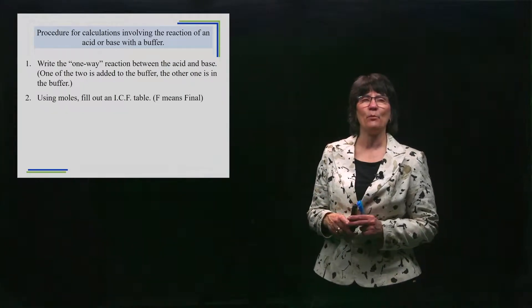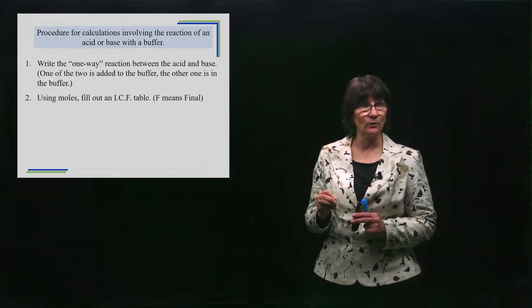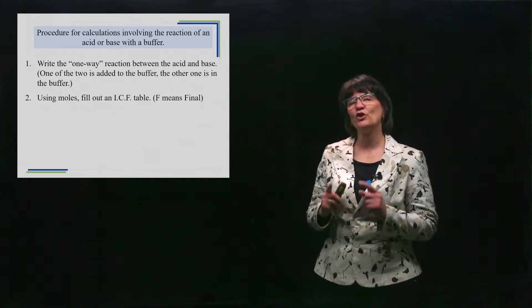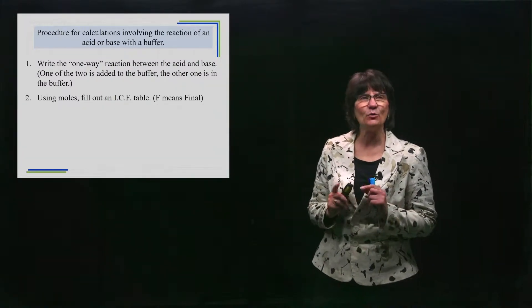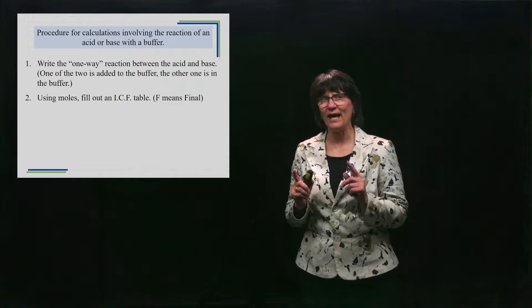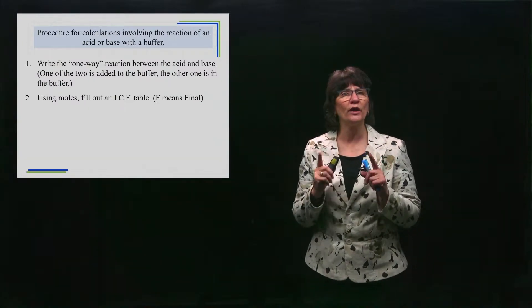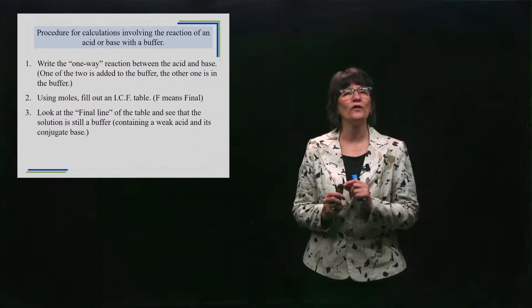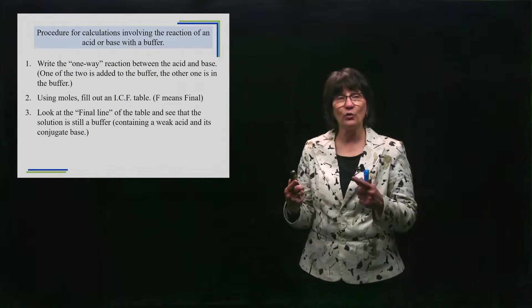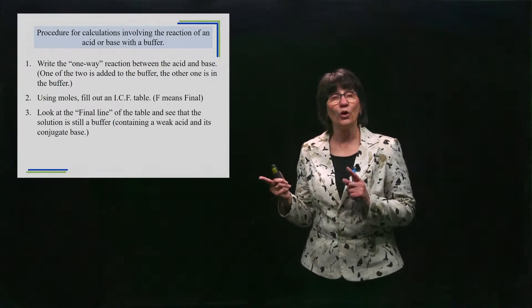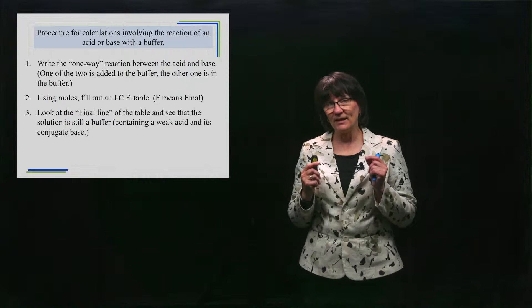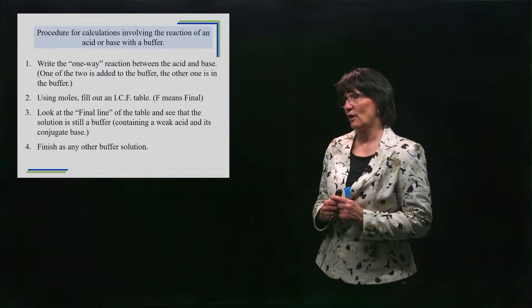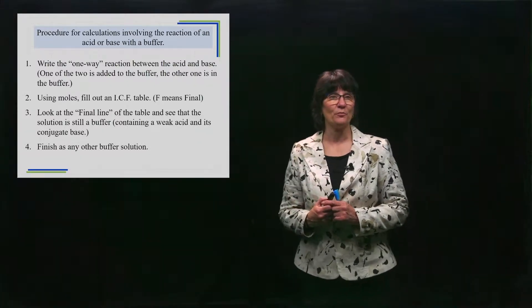We're going to learn a new table — I call it an ICF table instead of an ICE table, where F stands for final. It has a very similar feel, but when we do this table we have to use moles. It's a way of doing a limiting reactant problem that you haven't seen before, but it's very handy with one-to-one coefficients. Once we've filled in our table, we look at the F line — it tells us what to do next. We'll see that it's still a buffer, and we know how to calculate the pH of a buffer, so we finish it as any other buffer problem.